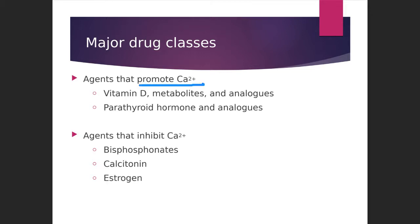Agents that promote the absorption of calcium include vitamin D, its metabolites, and parathyroid hormone and its analogues. These are the agents which help to absorb calcium in the body. Whereas in the second category, we have bisphosphonates, calcitonin, and estrogen. These are the agents which inhibit the absorption of calcium in the body.